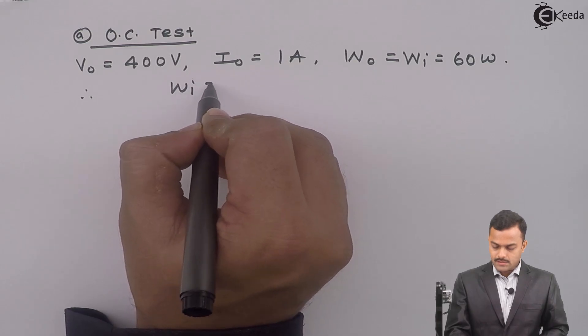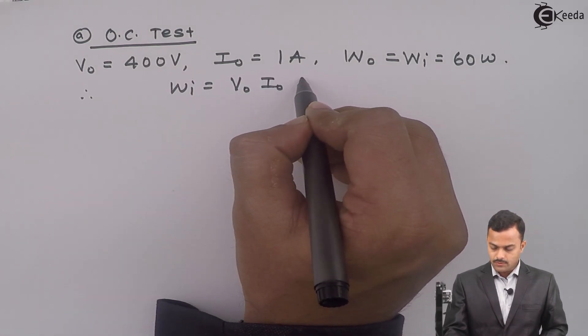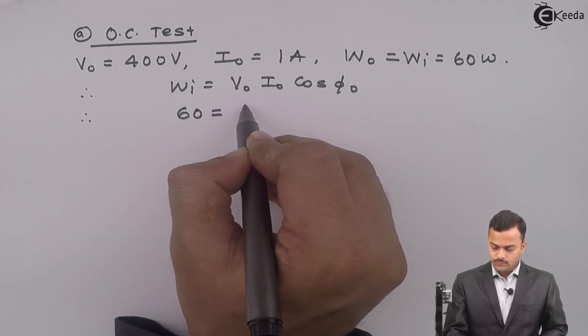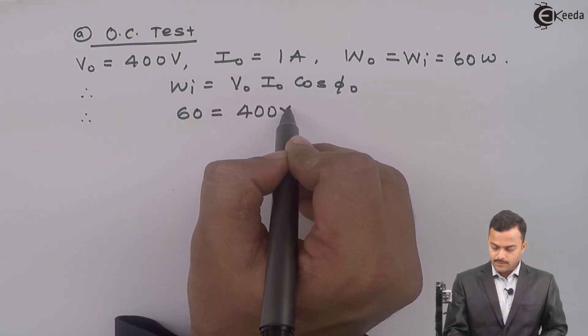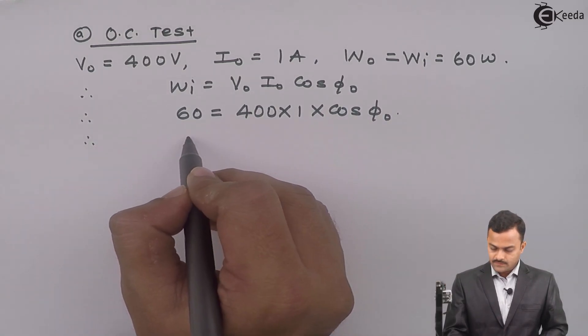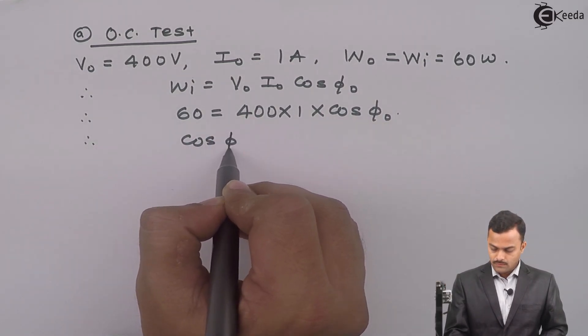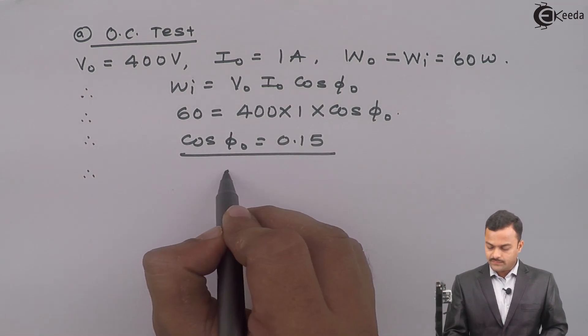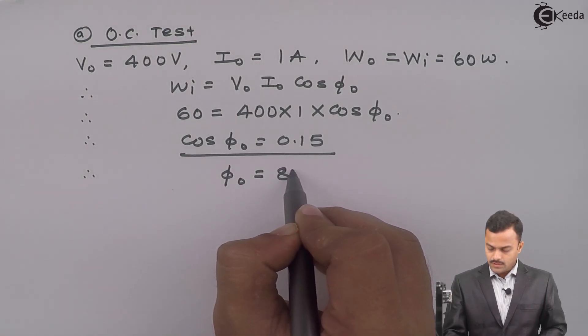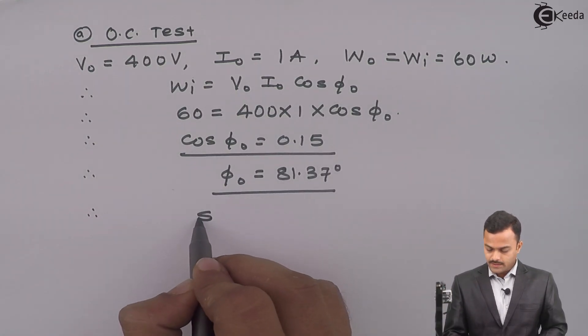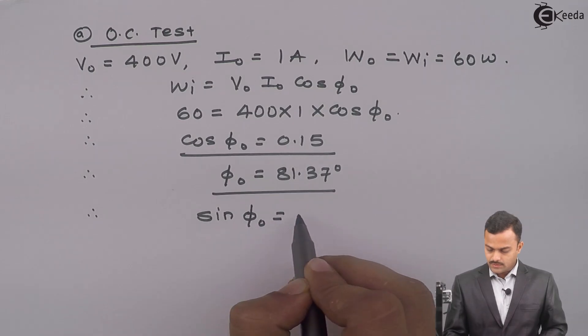WI is nothing but V0 I0 cos φ0. So, it is 60 equal to 400 multiplied by 1 multiplied by cos φ0. So then cos inverse if I take I will get φ0 81.37 degree. From the φ0, I can get sin φ0 which is nothing but 0.9887.